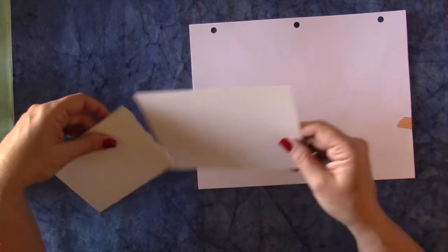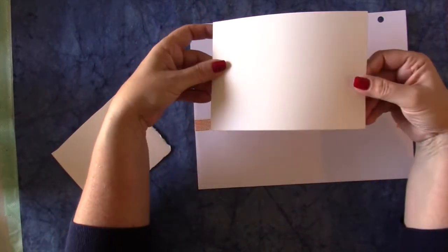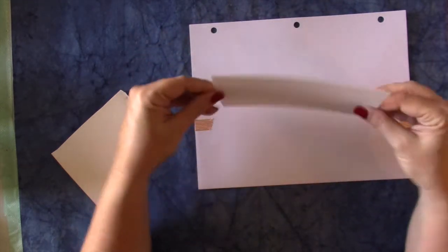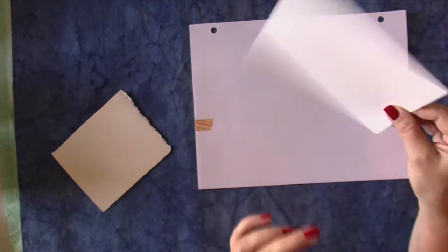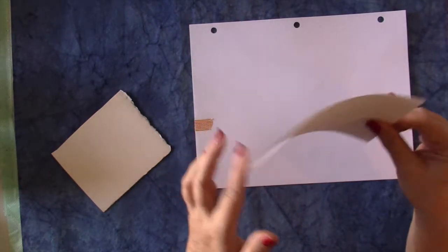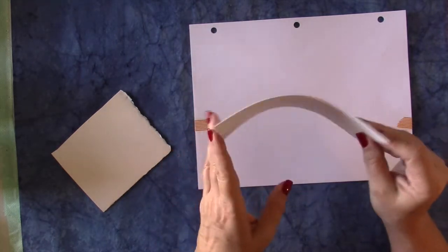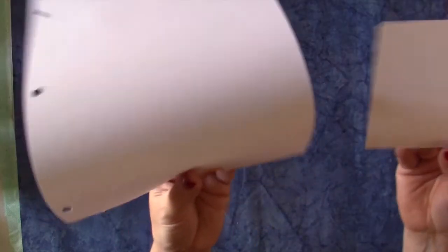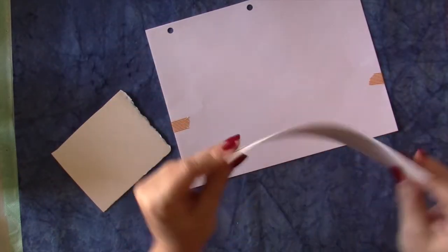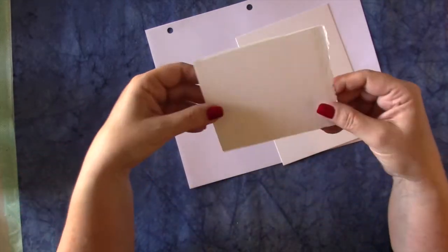This is the same Strathmore paper that I showed you that I get precut - this is just 5 by 7, but this is 140 pounds. You can see it is what some people call the student weight, although it's also used by many artists. That 140 is normally what I use, and it is much thicker than regular paper. It can take a little bit more abuse.